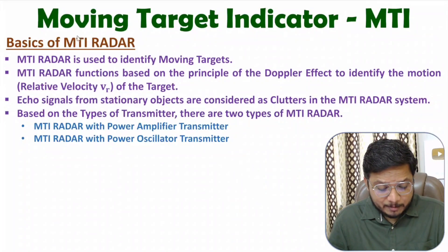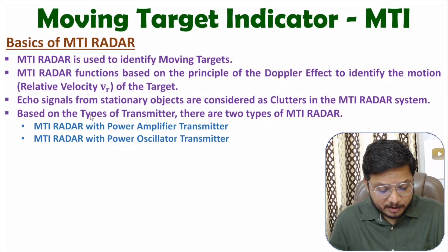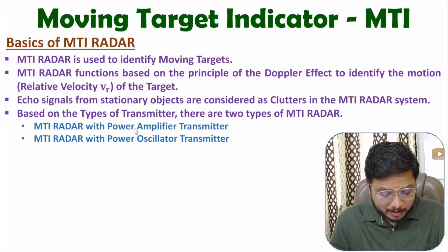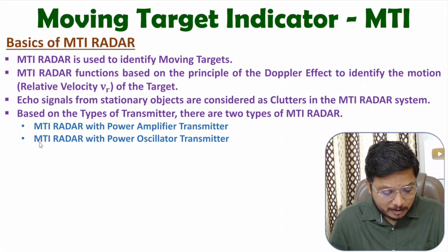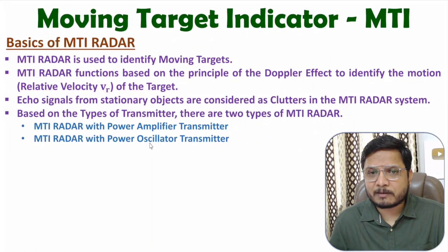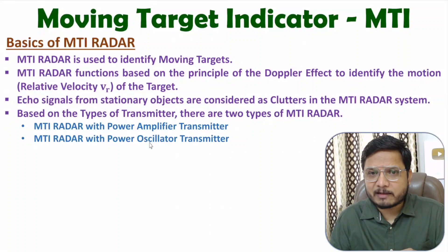There are two types of MTI radar systems, classified based on the type of transmitter used. One is MTI radar with power amplifier, and the second is MTI radar with power oscillator. Both of these radar systems will be studied in great detail in this video.